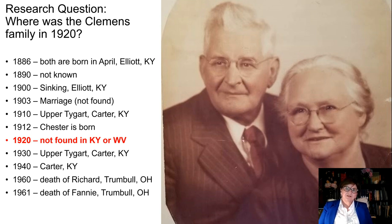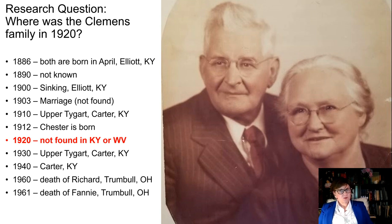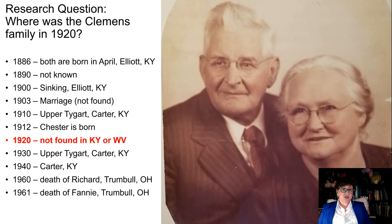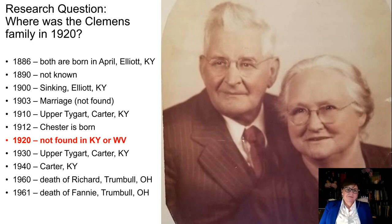Just two years after 1910, Chester — my dad — was born, number five out of 11 children. In 1920, I can't find the family anywhere. I looked under Richard, under Fannie, under Chester, under siblings born before and after dad. I cannot find them anywhere. There was extended family also in West Virginia, but they're not there either. Where are they?